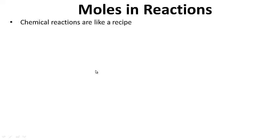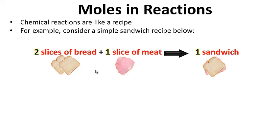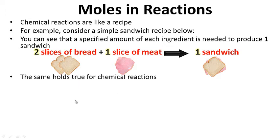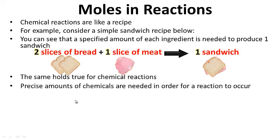Moles and reactions — chemical reactions are like a recipe. Consider a simple sandwich recipe: two slices of bread plus one slice of meat makes one sandwich. A specified amount of each ingredient is needed to produce one sandwich. The same holds true for chemical reactions — precise amounts of chemicals are needed in order for a reaction to occur.